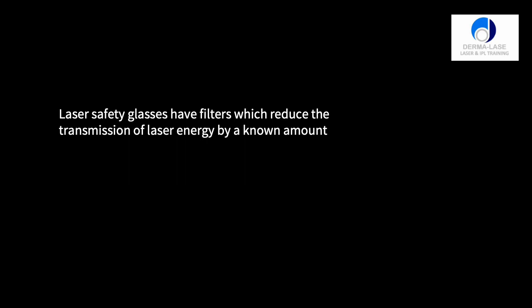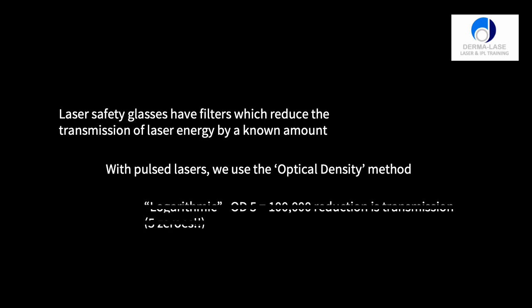This amount is usually determined by something we call the optical density scale, and this is a logarithmic scale. An optical density of five means it's a hundred thousand reduction in transmission, one with five zeros behind it.